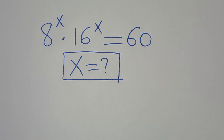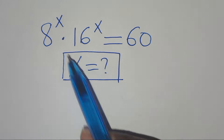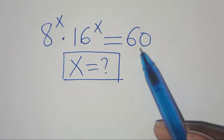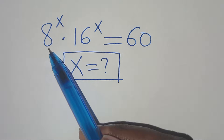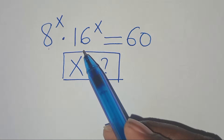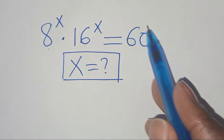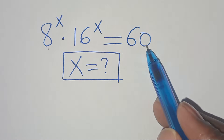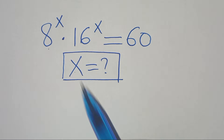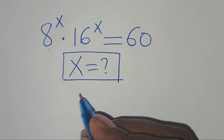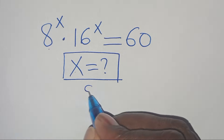Hello everyone, you're welcome to solve this nice exponential equation which is 8 to the power of x times 16 to the power of x, and this is equal to 60. So we need to find the value of x. Now let's provide a solution.